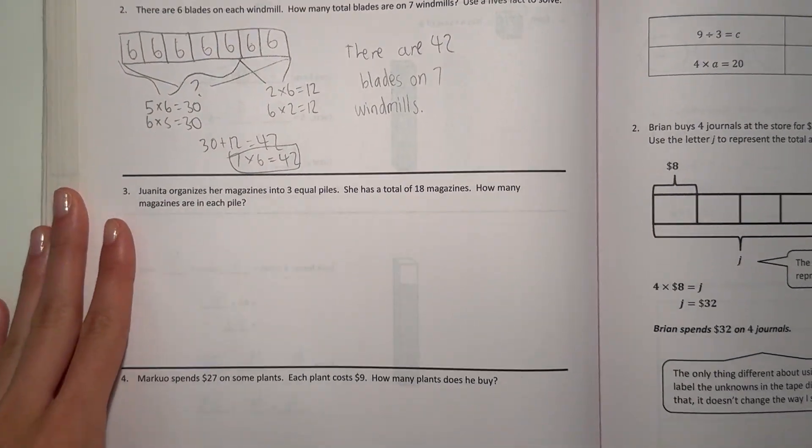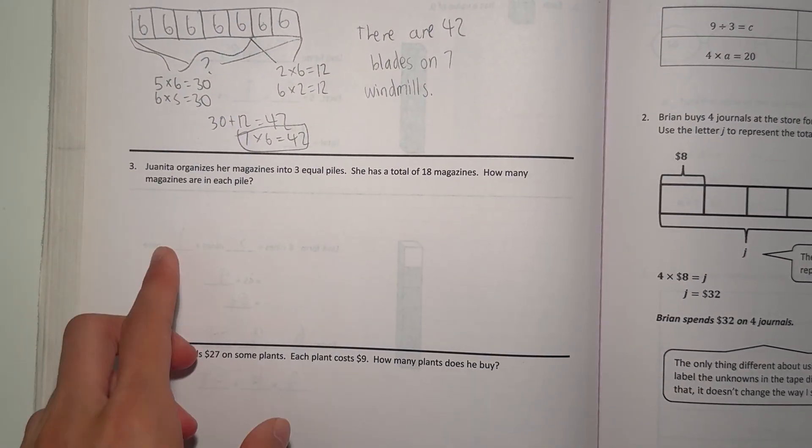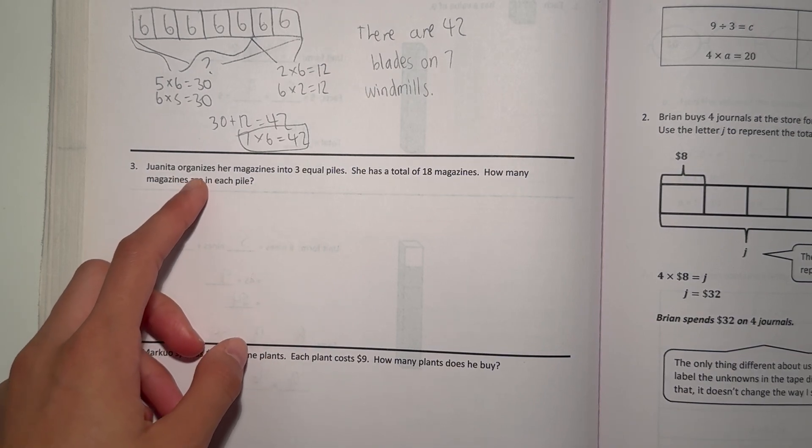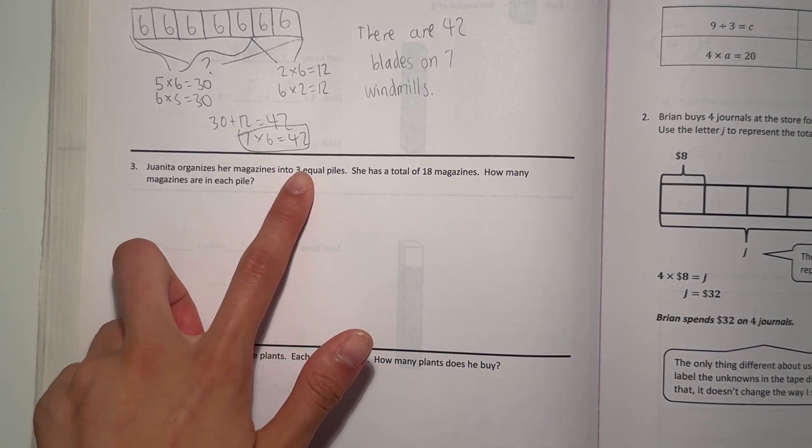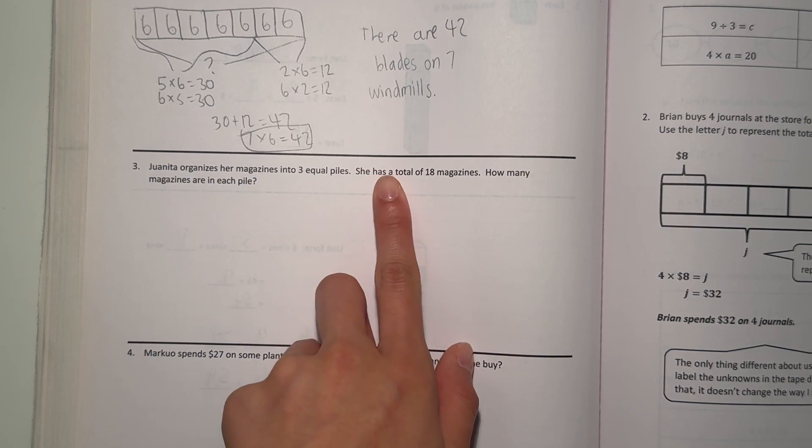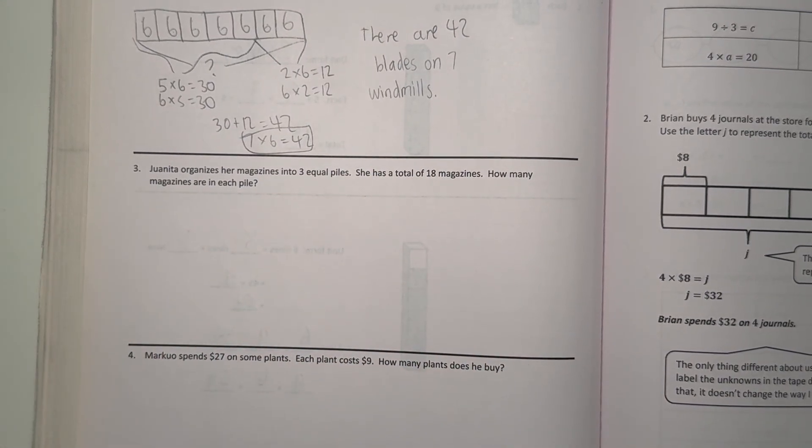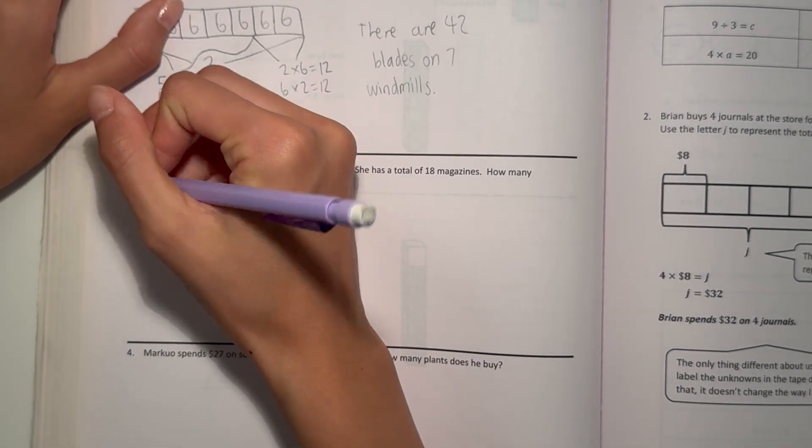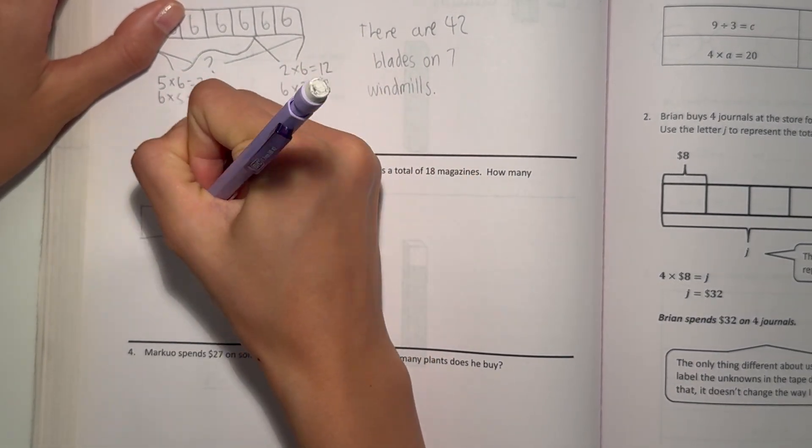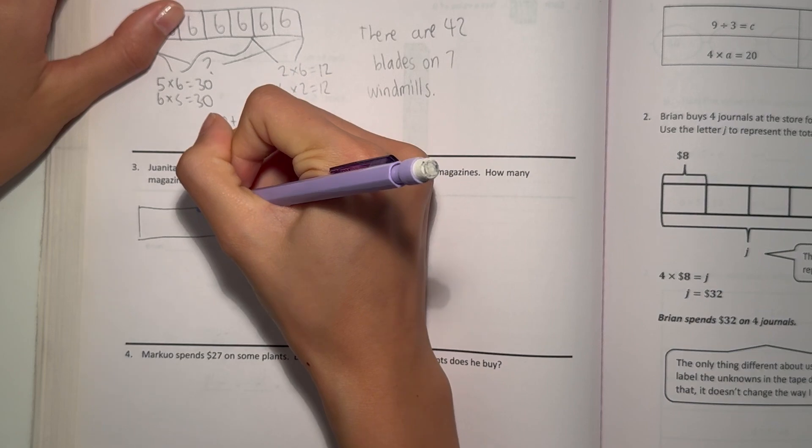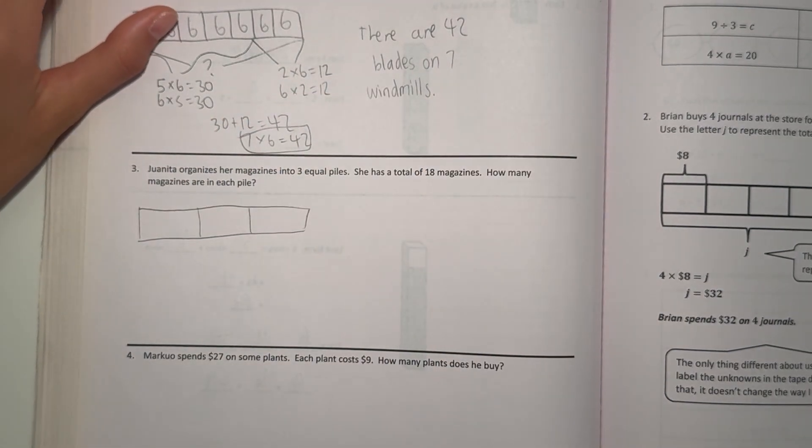Which means 7 times 6 equals 42. That means there are 42 blades on 7 windmills. Alright, number 3. Juanita organizes her magazines into 3 equal piles. She has a total of 18 magazines. How many magazines are in each pile?